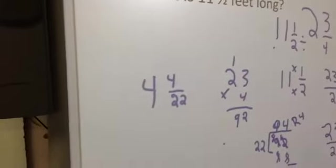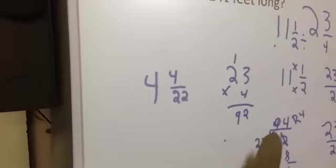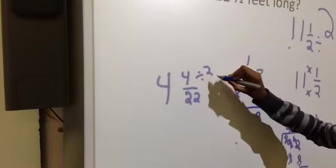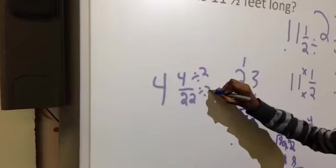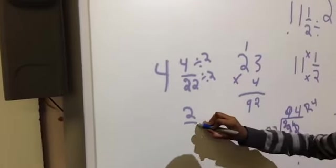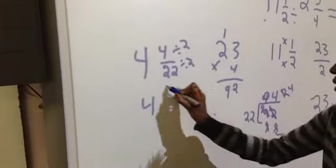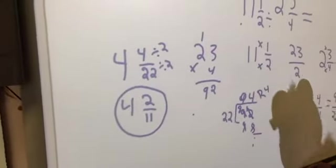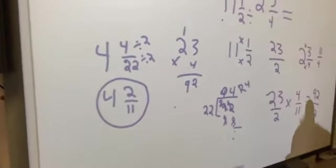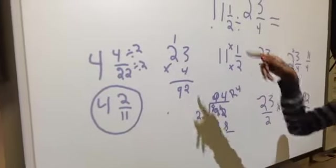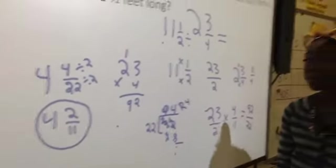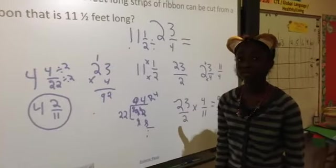So now is this a final answer, or do we have to simplify it? We have to simplify it. Keep on going. So divided by 2 is 2 elevenths, and you can't simplify that again, so that's the final answer. So what does 4 and 2 elevenths mean? That's how many times 2 and 3 fourths can go into 11 and a half. Okay, so how many strips can we make? 4 and 2 elevenths.